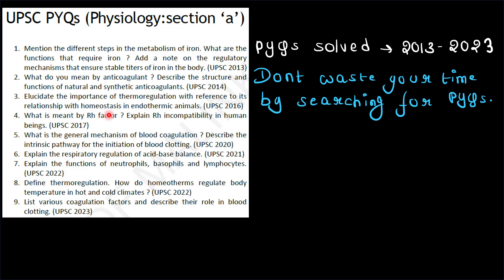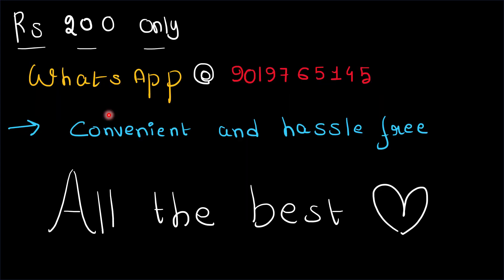If you want to collect your physiology handbook, you can WhatsApp me at this number 9019765145. This is my number and you can pay rupees 200 only. I will attach the PDF in WhatsApp only so the process is convenient and hassle free.